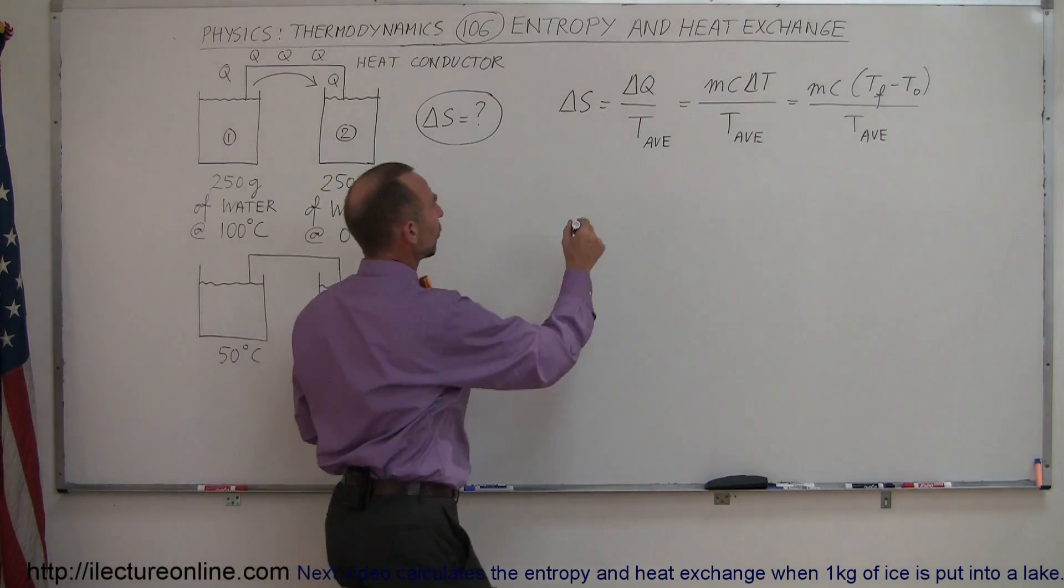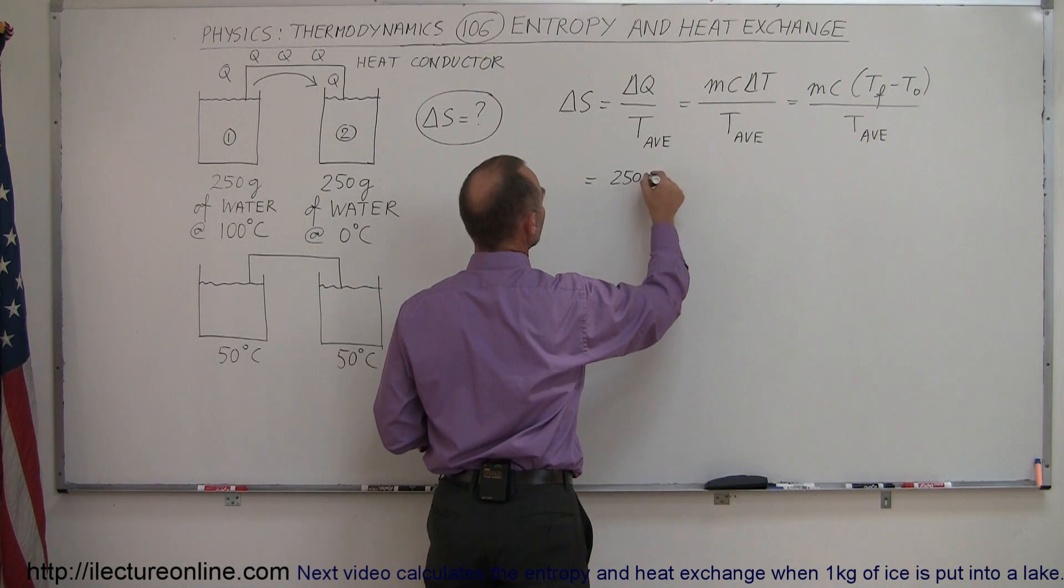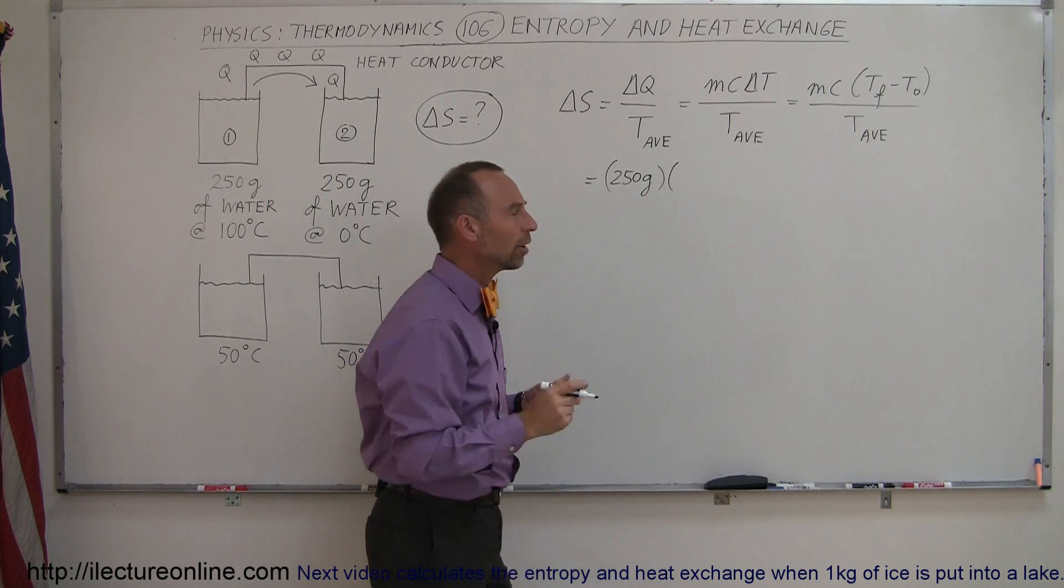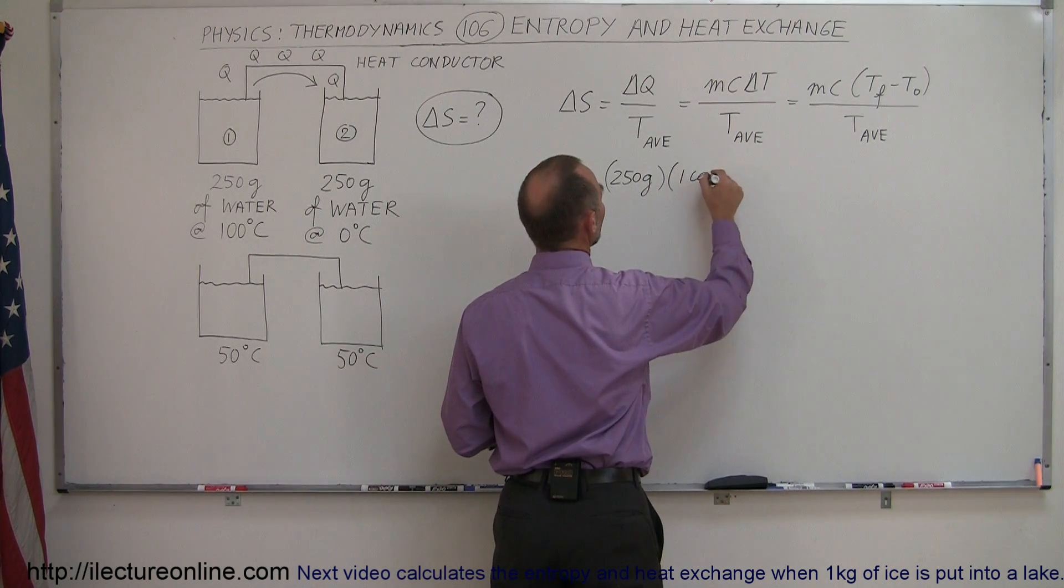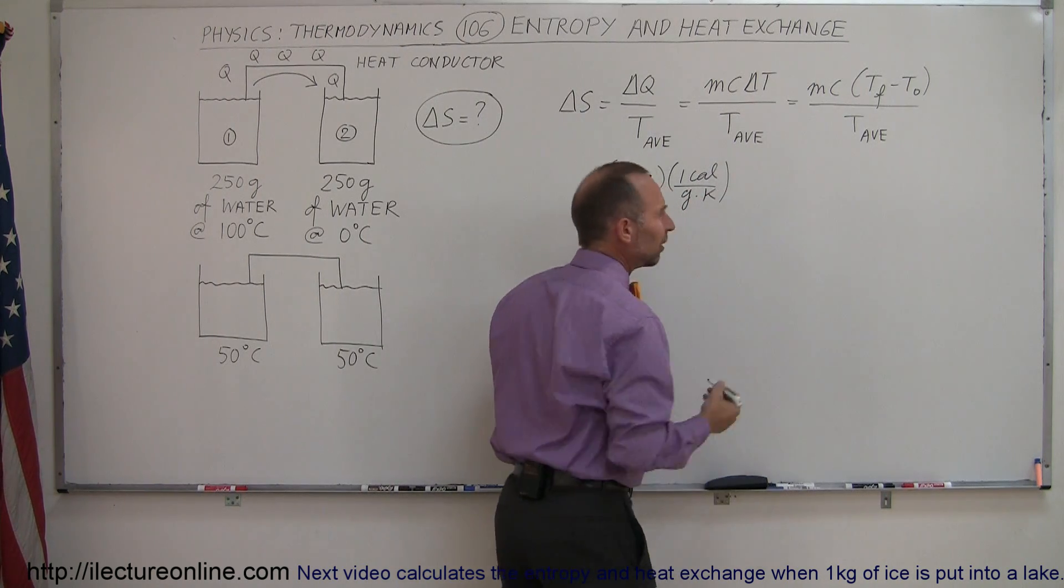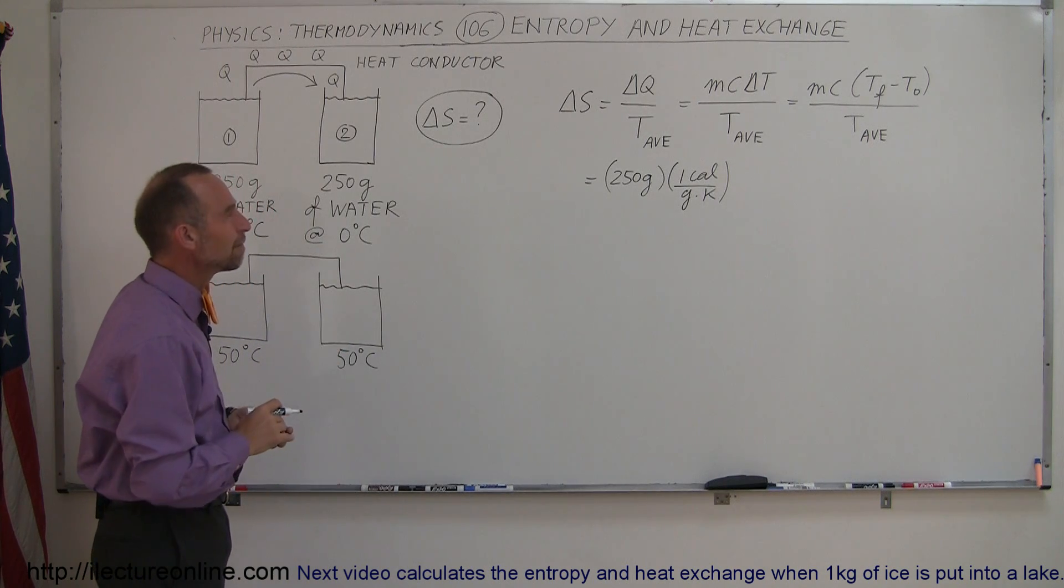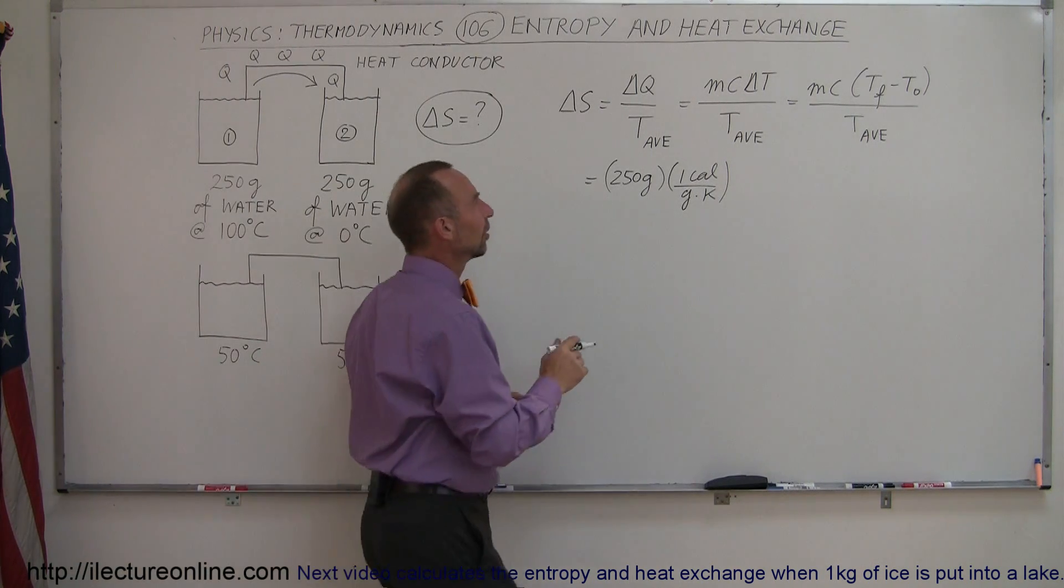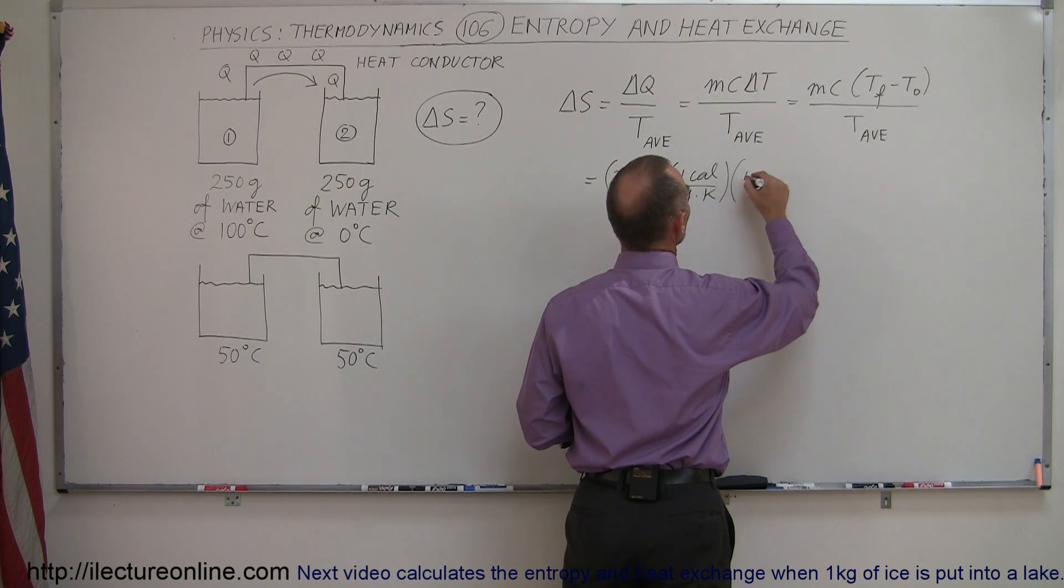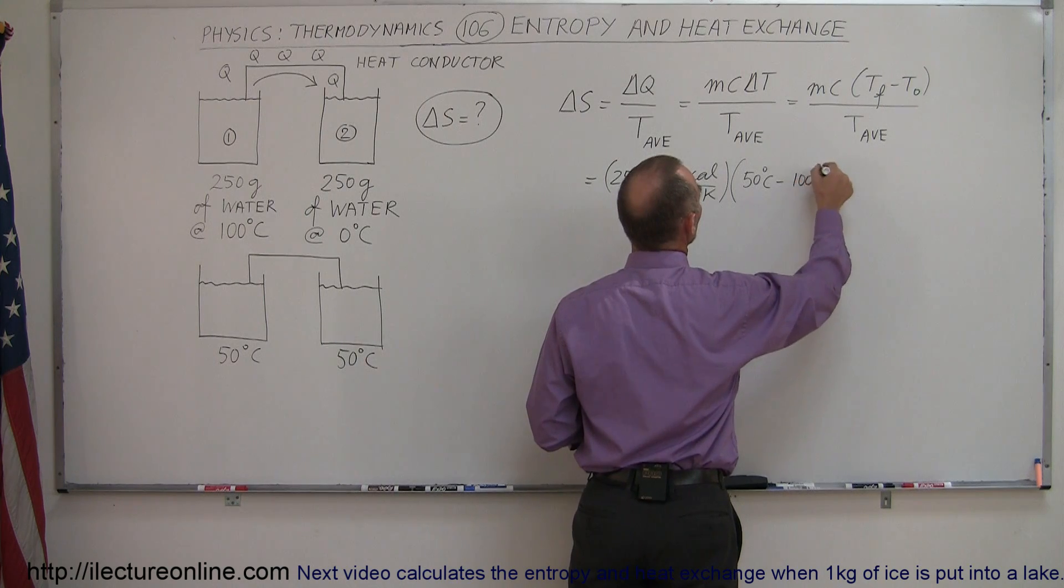Alright, let's plug in the numbers that we have. So this is equal to, the mass would be 250 grams times C. Now, for water, C is one calorie per gram per Kelvin, centigrade degrees or Kelvin, same thing. And times T final minus T initial, so it would be, final would be 50 degrees centigrade minus 100 degrees centigrade.